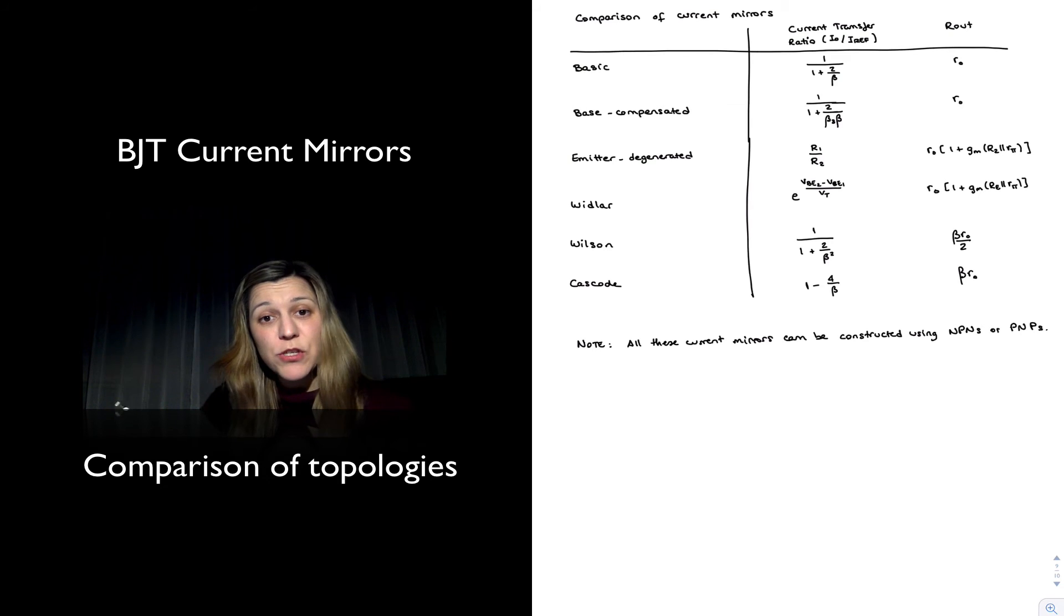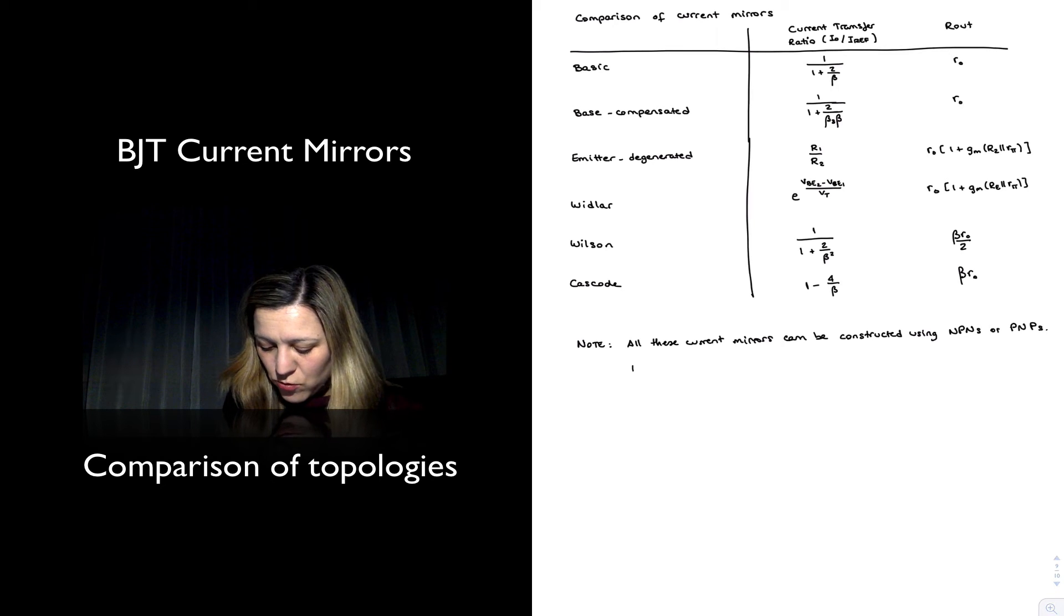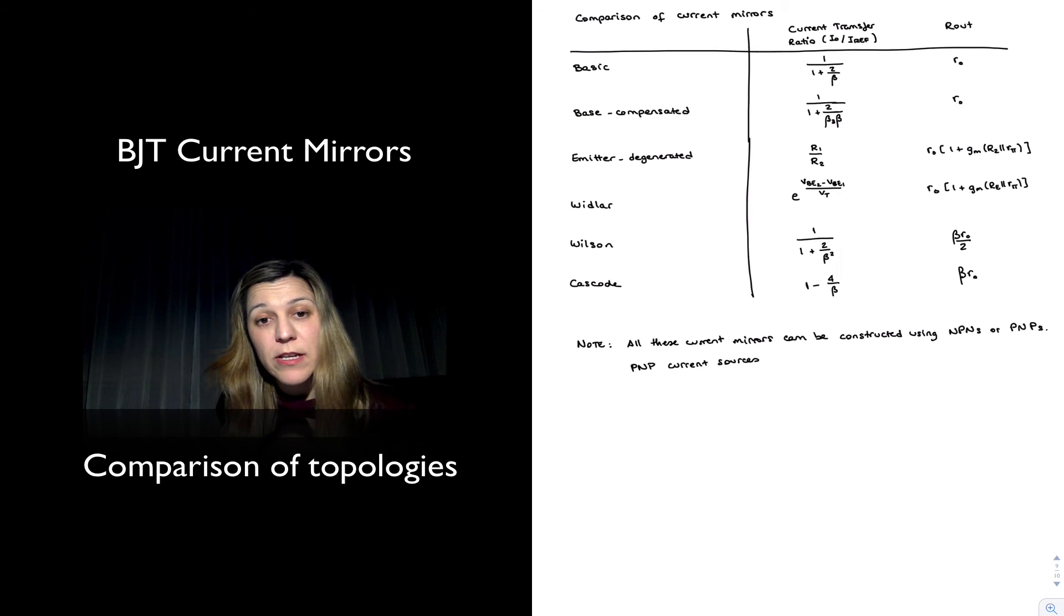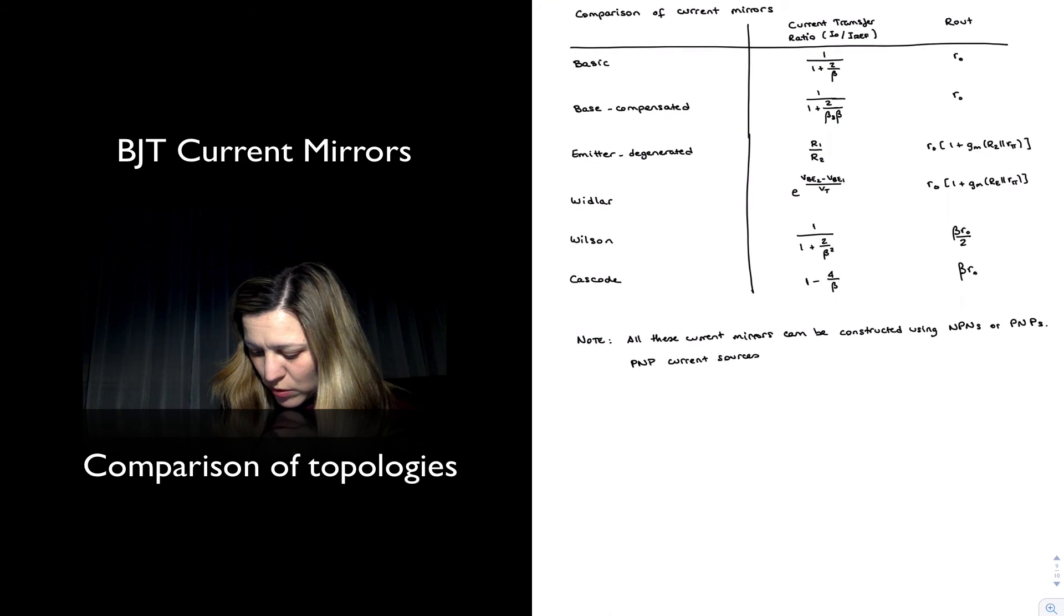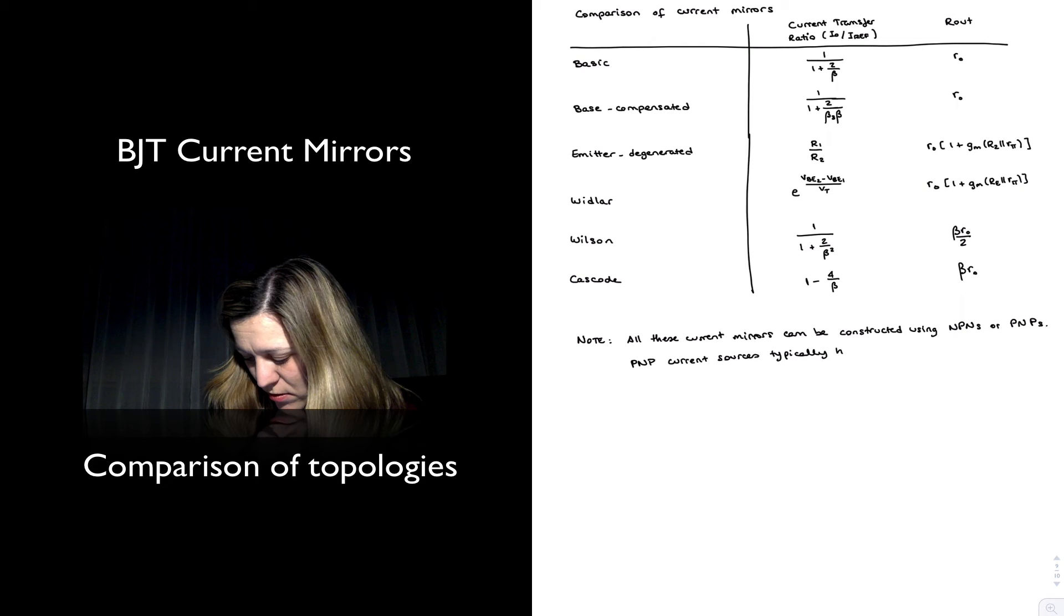In the case of NPN transistors, they are draining the current. In the case of the PNP transistors, they will be sourcing the current to the circuit. Now, something we want to keep in mind, though, is that PNP current sources typically compare to the NPN equivalents as follows. PNP sources will typically have the following characteristics.